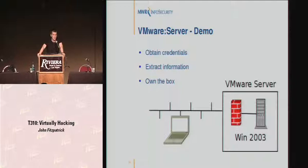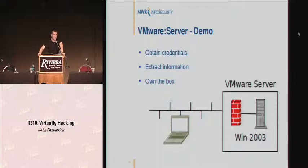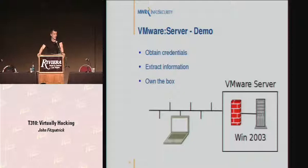We'll move on to a few demos using some of the tools I've developed and techniques I've played about with to gain access to a VMware server and the virtual machines. I should probably explain the setup: I've got a network with my laptop connected, and from there we'll perform the attacks. I've got VMware Server running with a Windows 2003 box on it. We can assume that 2003 box is completely firewalled off from the rest of the network — maybe even sitting on a different network — so gaining access, we could use it as a proxy onto that new network.